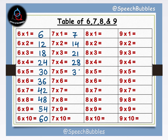7 5s are 35, 7 6s are 42, 7 7s are 49, 7 8s are 56, 7 9s are 63, 7 10s are 70. Next,